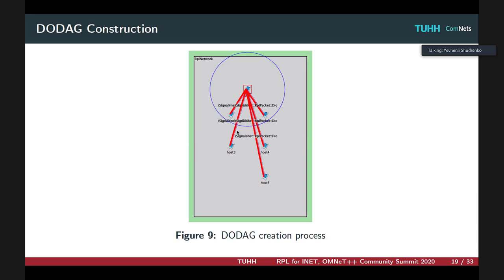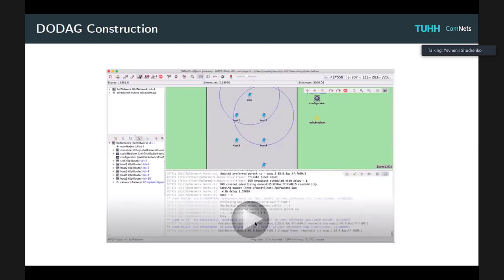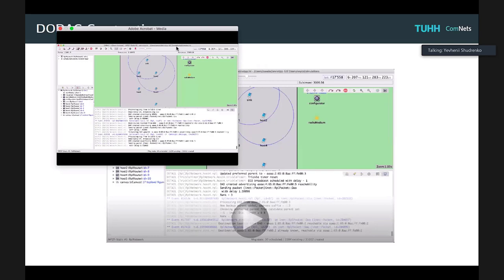The topology construction process happens when the sink starts broadcasting DIO messages and nodes, RPL routers enabled with RPL functionality, will process these DIO packets and join the proposed DODAG. Here's a small animation showing this process briefly.